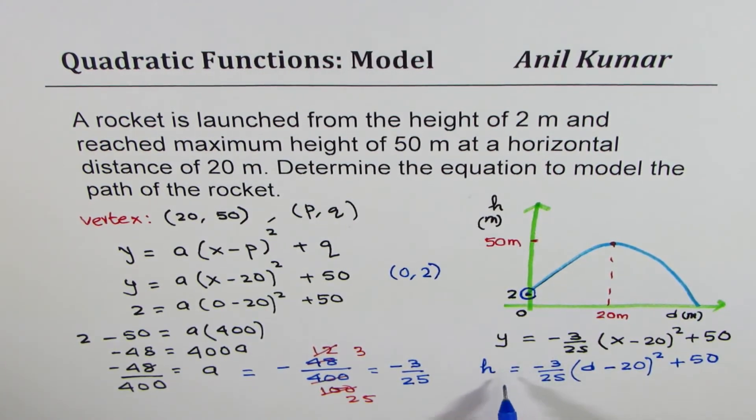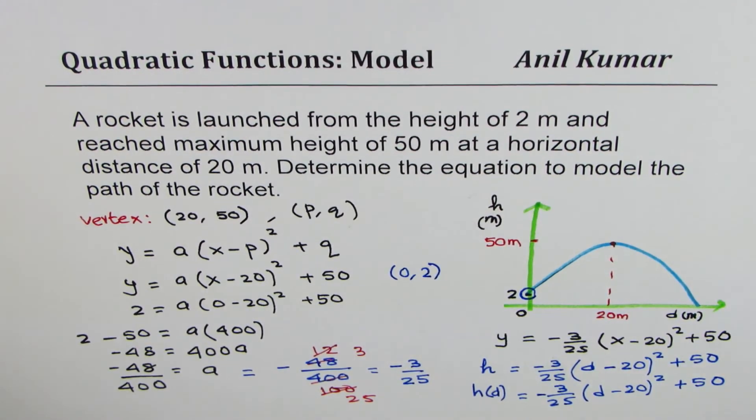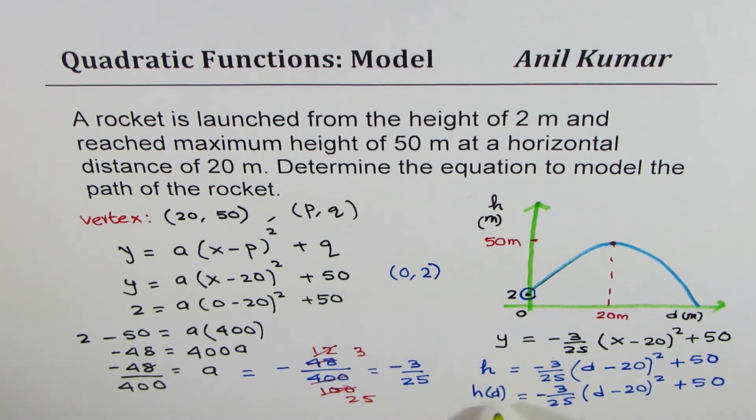Now, those of you who are doing functions, they can also write this equation as h within bracket d. Since the height has been written as a function of distance d. So we could write also our answer as h(d) equals minus 3 over 25 times (d minus 20) whole square plus 50. So preferred answer is that final one.